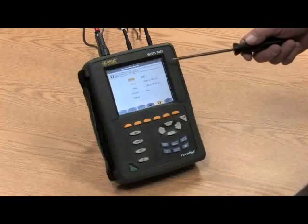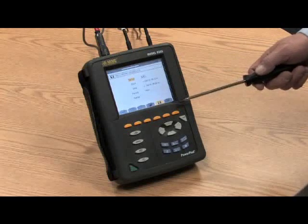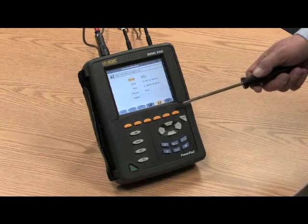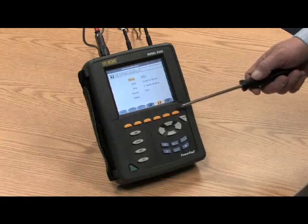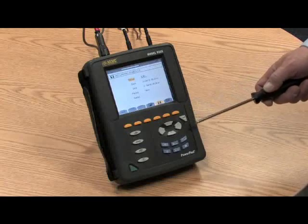The Model 8335 includes 2 gigabytes of memory, and with this amount of memory we can record up to 22 different variables once per second for 30 days or longer.